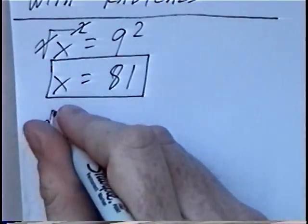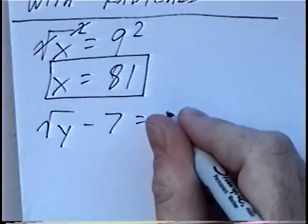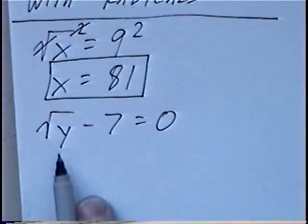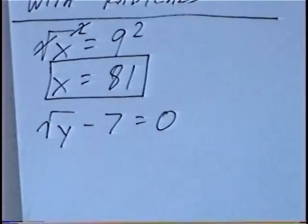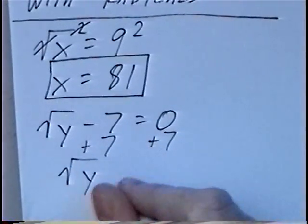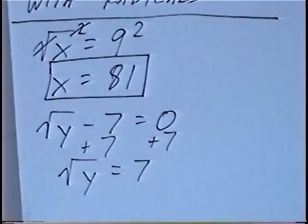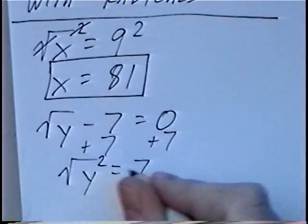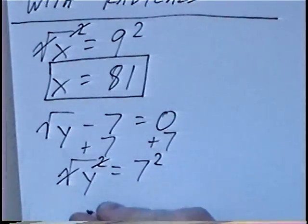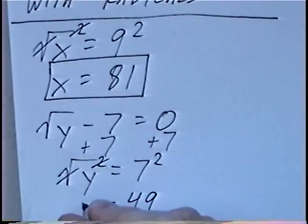Second question: radical y minus 7 equals 0. Solving for y, we want to get rid of the minus 7 first by adding 7 to both sides. So we'll have radical y equals 7, and again the opposite of a radical or square root is to square both sides. Cancelling out the radical, we'll have y equals 7 squared, which is 49.